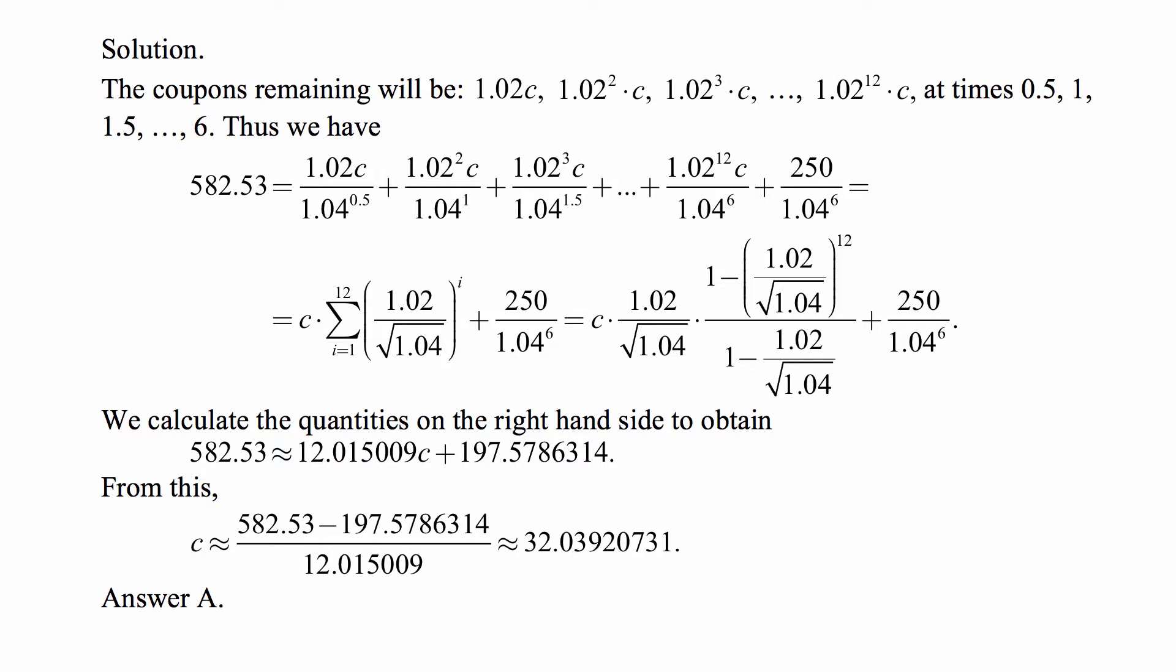This equation becomes 582.53 ≈ 12.015009c + 197.5786314. Solving for c: c ≈ (582.53 - 197.5786314)/12.015009 ≈ 32.03920731. Answer A.